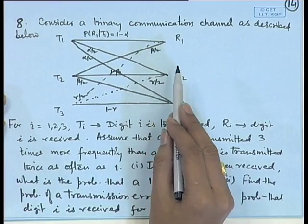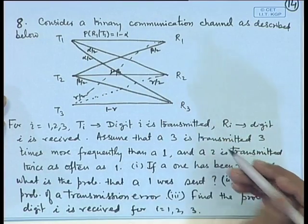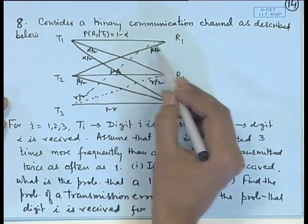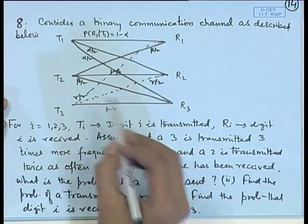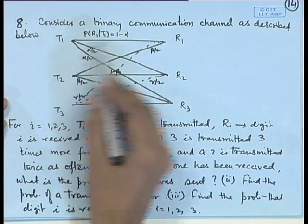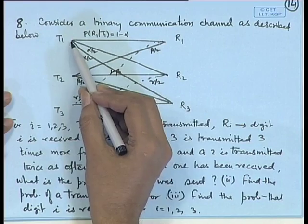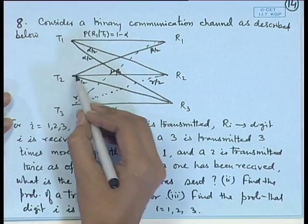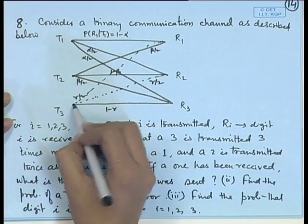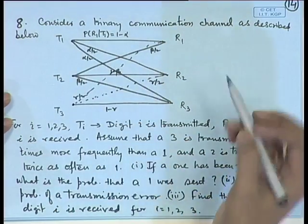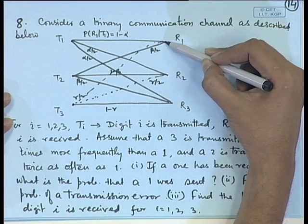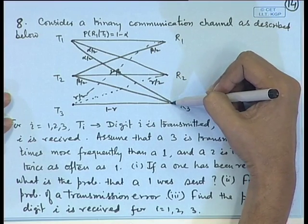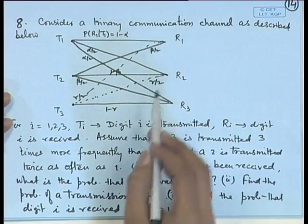Consider a trinary communication channel. T_i means digit i is transmitted; R_i means digit i is received. T1 means digit 1 is transmitted, T2 digit 2, T3 digit 3; R1 means digit 1 is received, R2 digit 2, R3 digit 3. Digits 1, 2, 3 are transmitted, but due to noise they may not be received as the same.